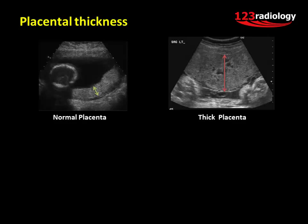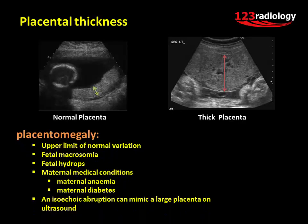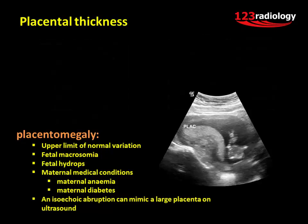Placental thickness tends to gradually increase with gestational age in a linear fashion. Sonographically, this can be seen to be approximately 1 mm per week, and the thickness of the placenta can be used to approximate gestational age. The maximum thickness of a normal placenta at any point during pregnancy is often considered to be 4 cm. An abnormally increased placental thickness falls under the spectrum of placentomegaly, associated with increased risk of placental insufficiency. Causes include upper limit of normal variation, fetal macrosomia, fetal hydrops, and maternal medical conditions such as maternal anemia and diabetes. Note that an isoechoic abruption can mimic a large placenta on ultrasound.